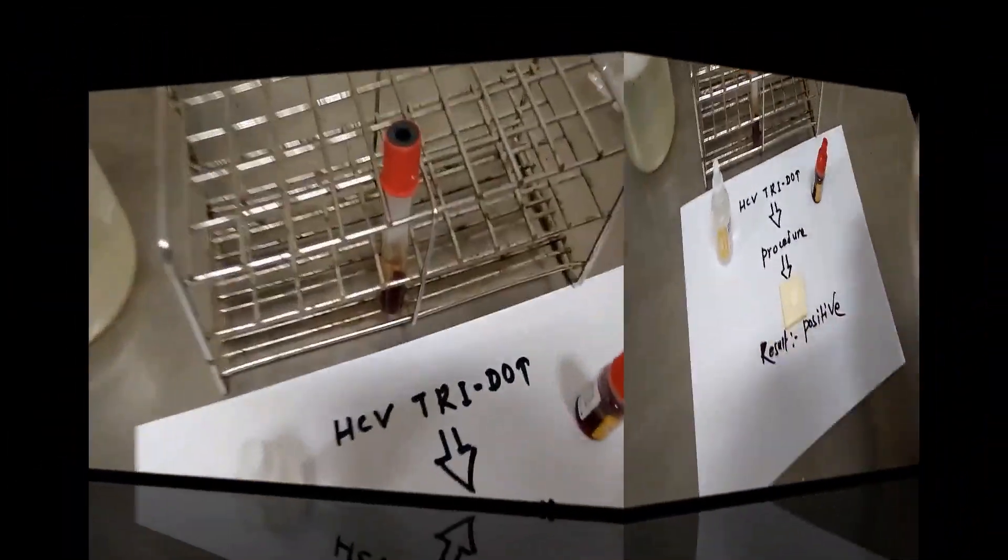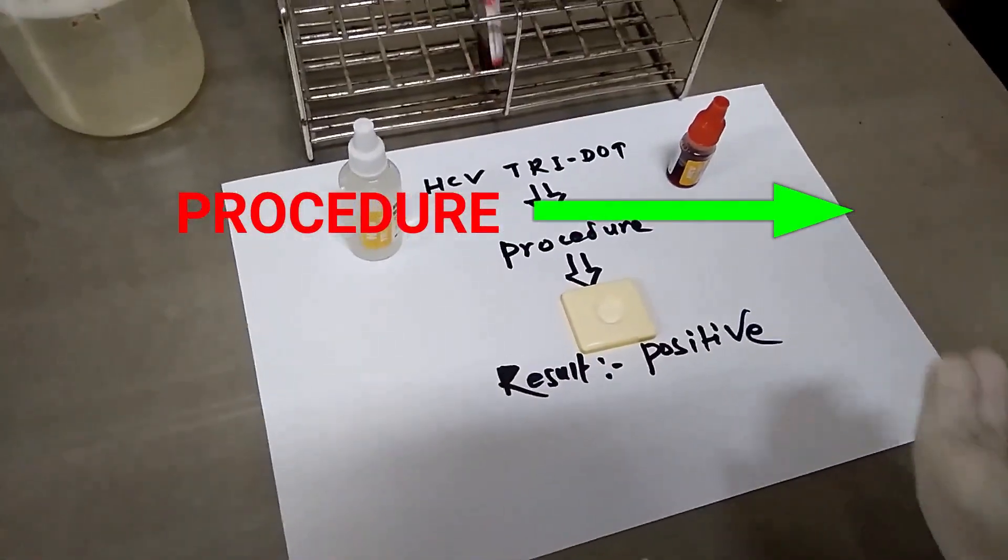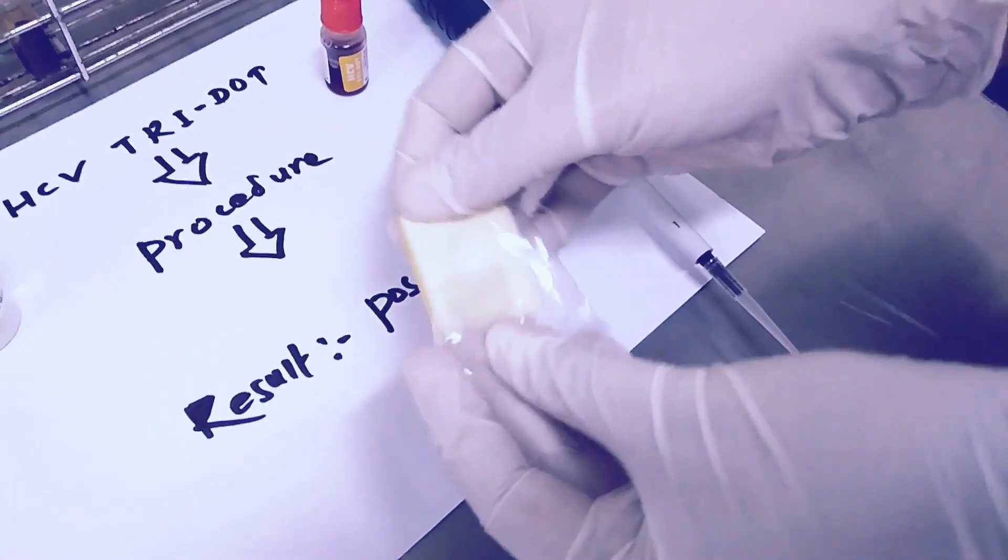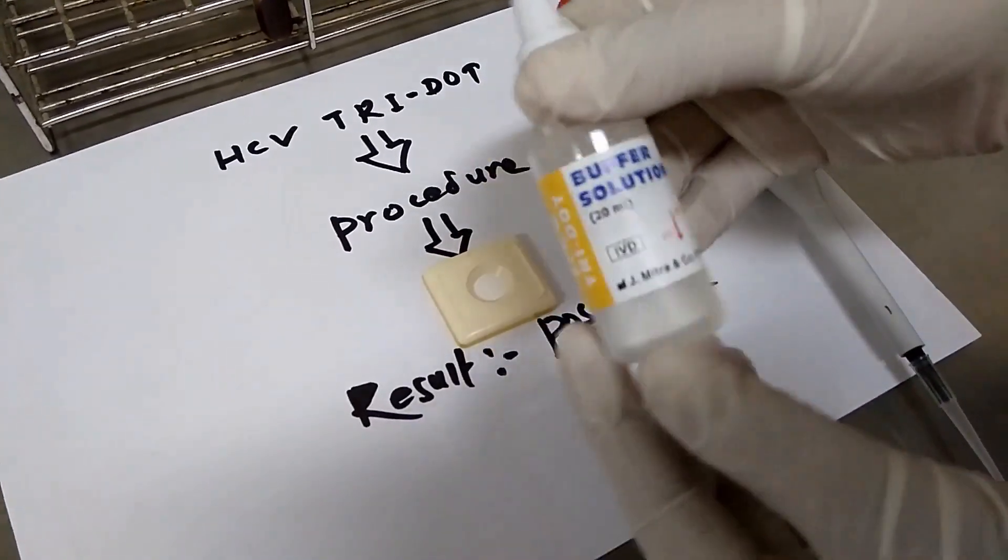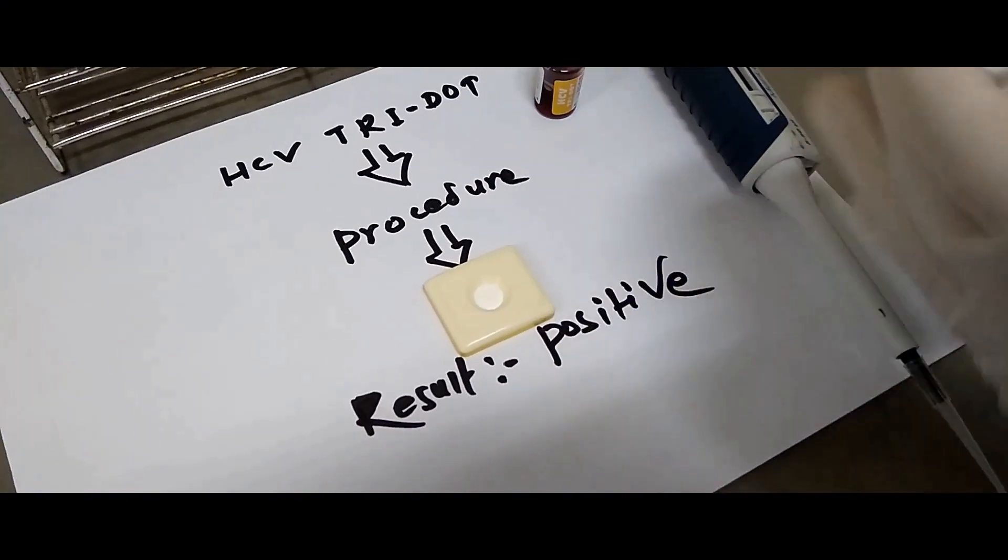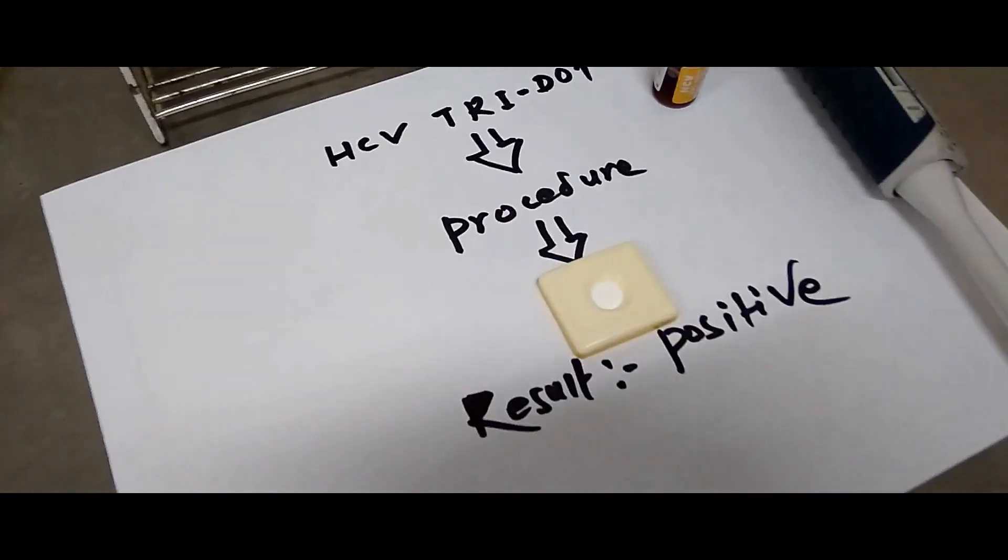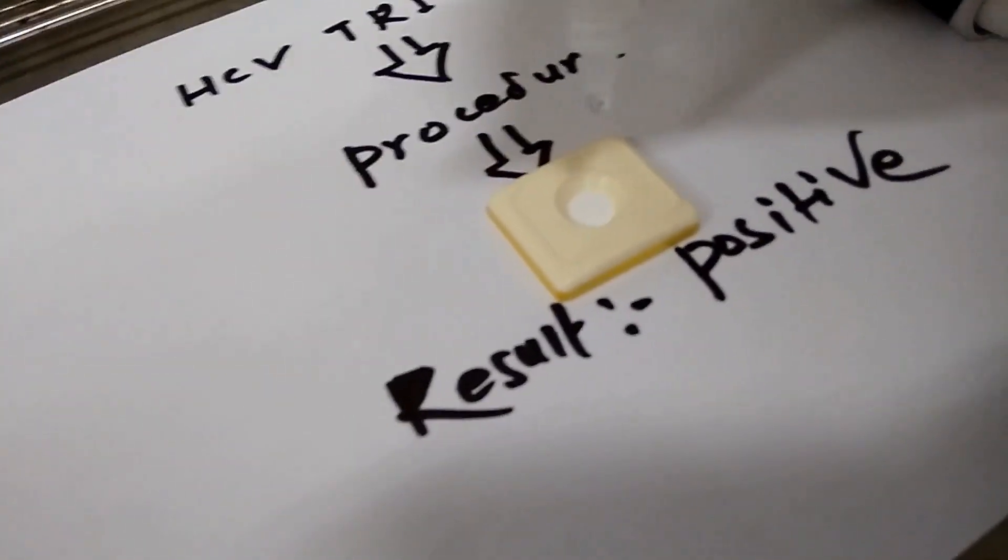Now about procedure. Open the sleeve pouch and remove the test device and use device as soon as possible. Add 3 falling drops of buffer and wait for drying.